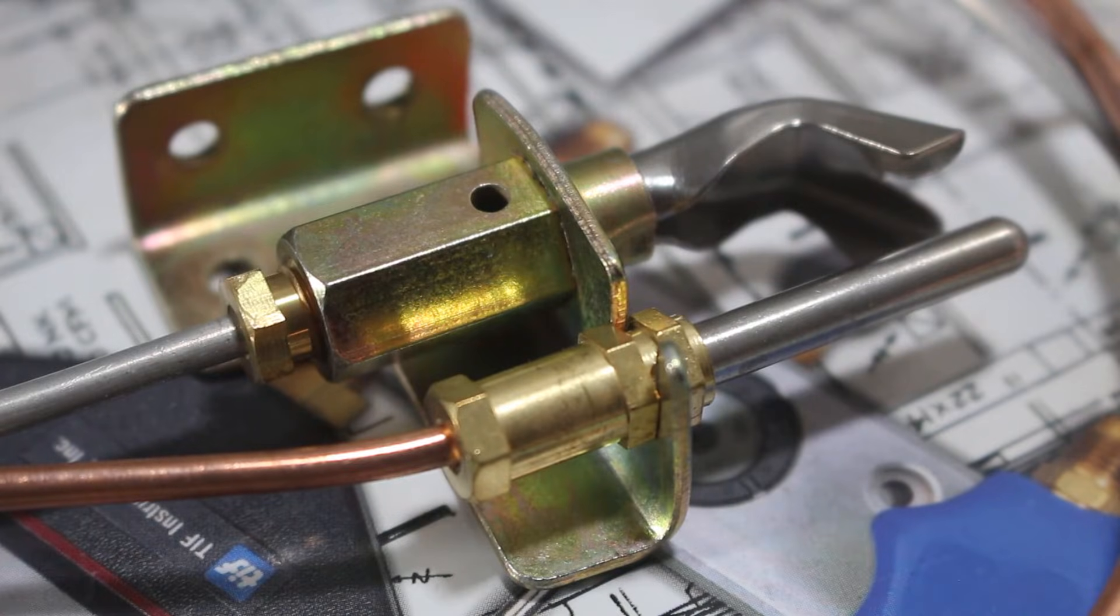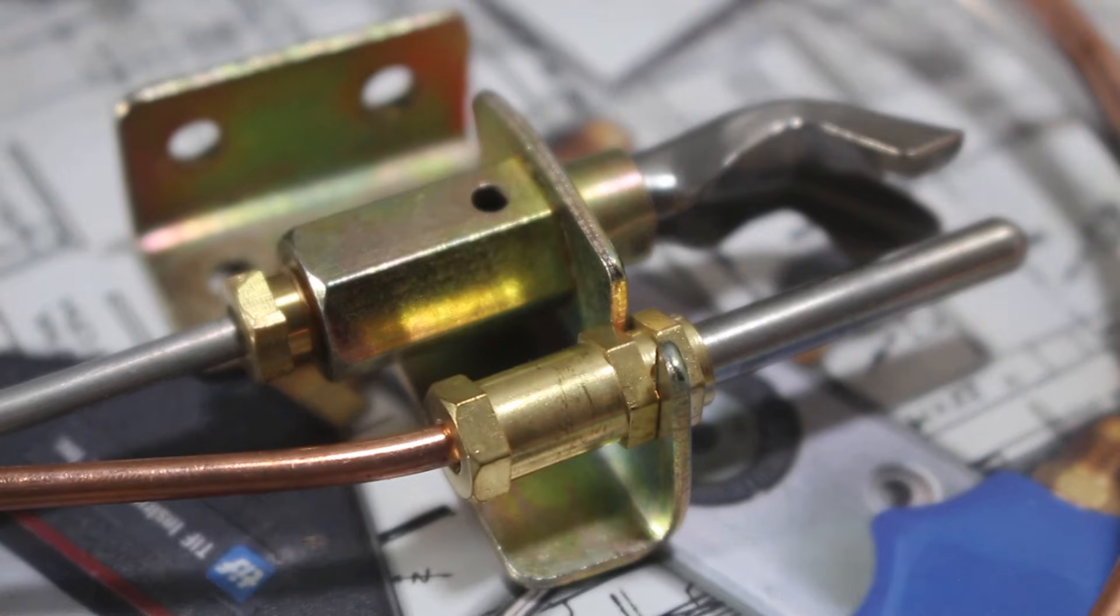After a predetermined amount of time being heated, the thermocouple will generate voltage where it will be able to hold open a combination gas valve for the pilot tubing, proving we have experienced combustion. Once that temperature is reached, the technician can let go of the gas valve manually and the thermocouple will do it automatically, and a steady pilot flame can be established.